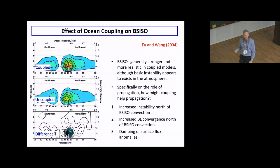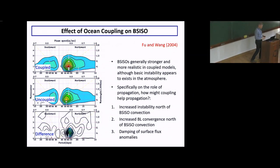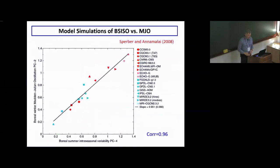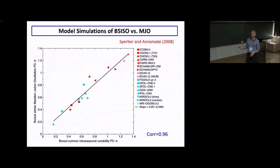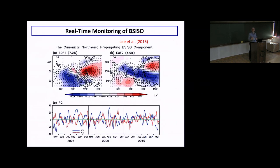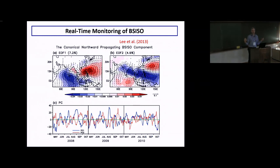Model skill at simulating the BSISO is related to model skill at simulating the MJO, with a correlation of 0.96 between MJO skill and BSISO skill using two different measures.